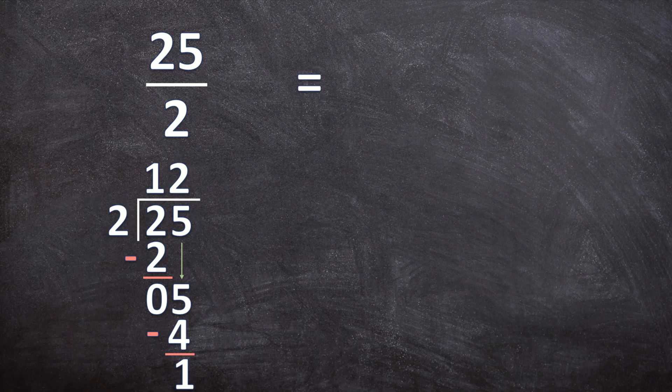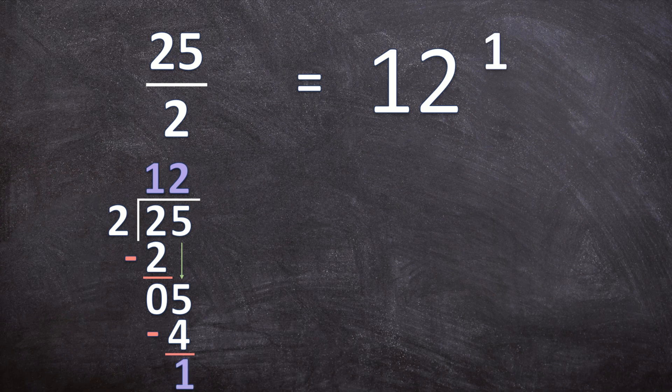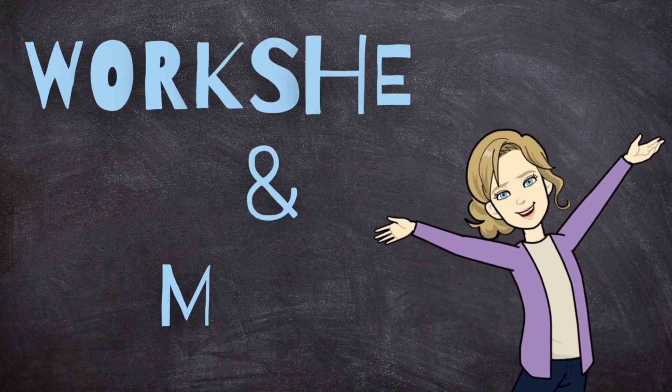So now we can write down our mixed number. How many times can you take 2 out of 25? 12 whole times. And what's left over? What's the remainder? 1. So 1 over 2 is left over.